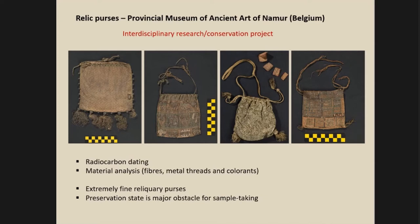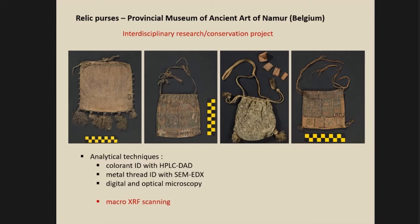These are very fragile reliquary treasures which have almost not been touched before, so we saw immediately that their preservation state would be a major obstacle for sample taking. We started to do radiocarbon dating and material analysis using different techniques — for instance, we analyzed the dyes with HPLC, started to identify the metal threads with SEM-EDX, took digital images, and did optical microscopy and digital microscopy to identify the fibers and the morphology of the metals. Then we also tried macro XRF scanning, which I'm going to focus on.